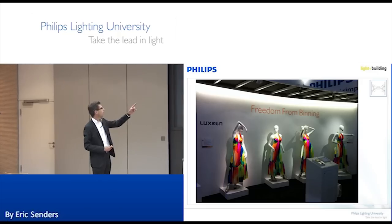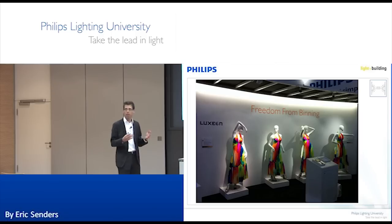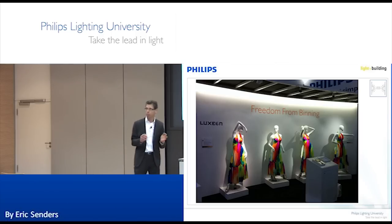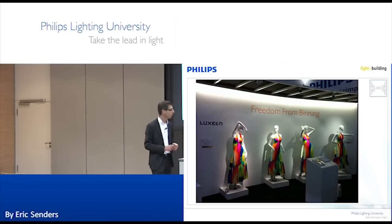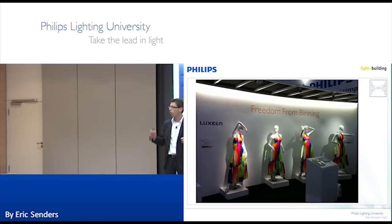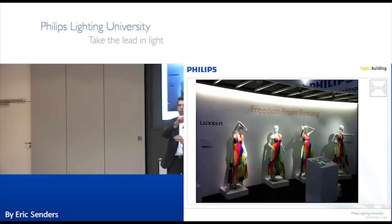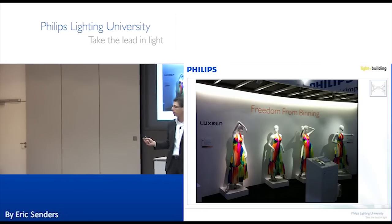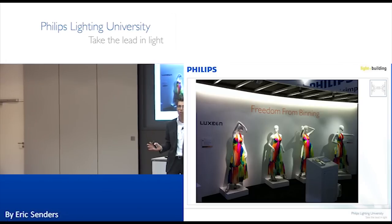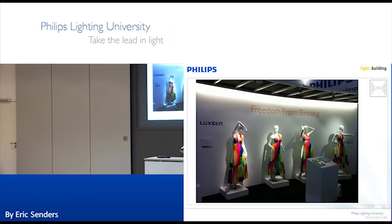If you look at a wall lit completely with randomly selected LEDs from manufacturing, that's what we call freedom from binning. You don't need binning anymore — there is only one color. If you want 3000 Kelvin, you're going to get 3000 Kelvin.